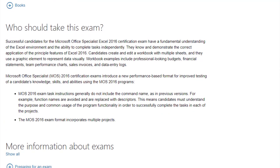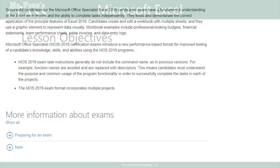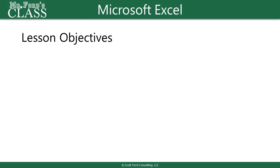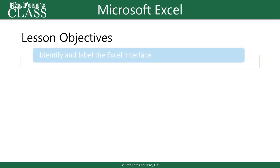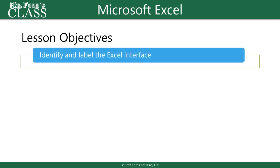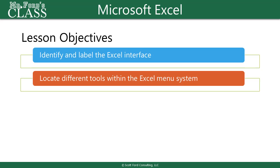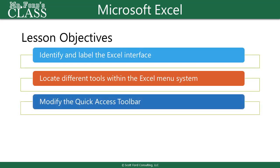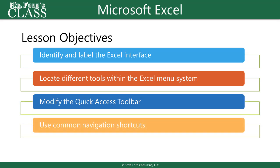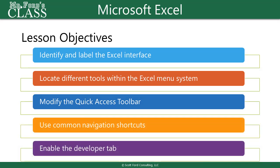So let's take a look first at our introductory chapter, Chapter 1: Introduction. Our objectives are as follows: identify and label the Excel interface; locate different tools within the Excel menu system; modify the quick access toolbar; use common navigation shortcuts; and enter the developer tab.